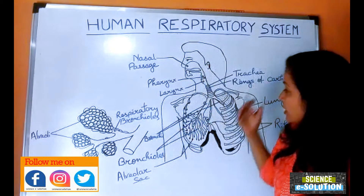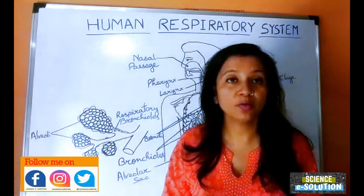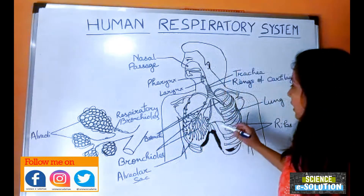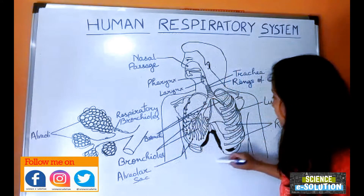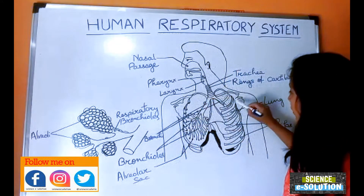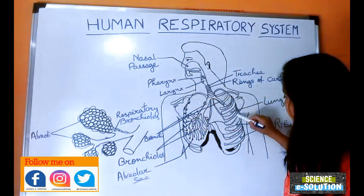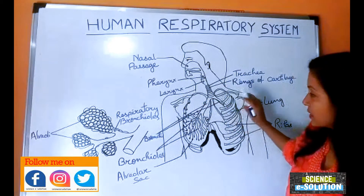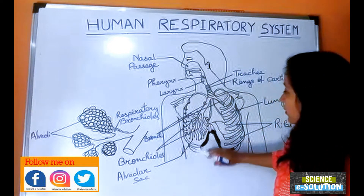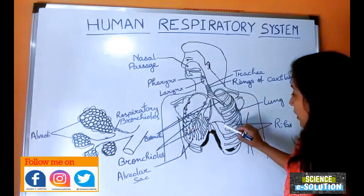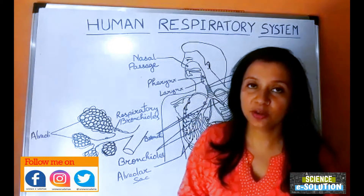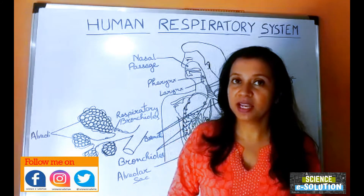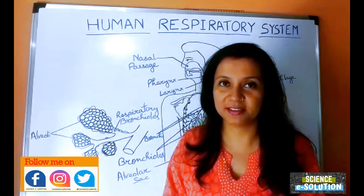If asked where the lungs are located, you can write: the lungs are located in the thoracic cavity, they are protected by the rib cage, and they lie above the diaphragm. So the location of the lungs is above the diaphragm, protected by the rib cage, and located in the thoracic cavity.